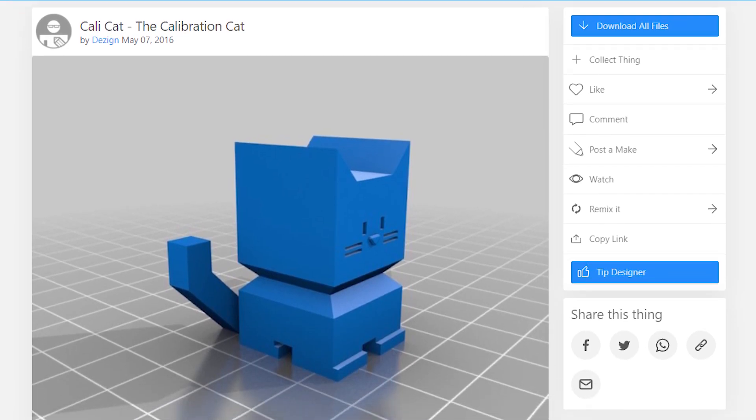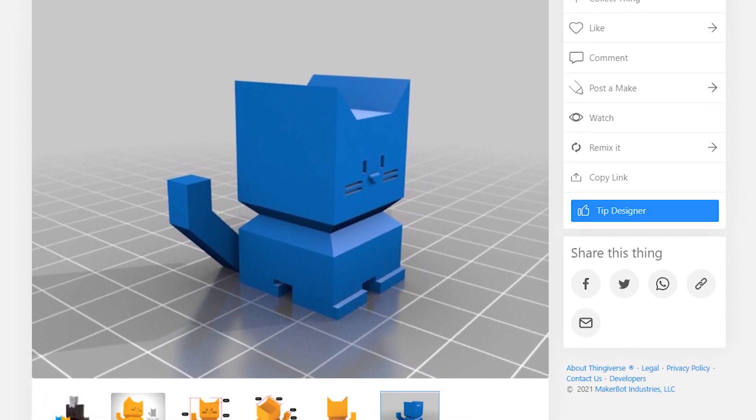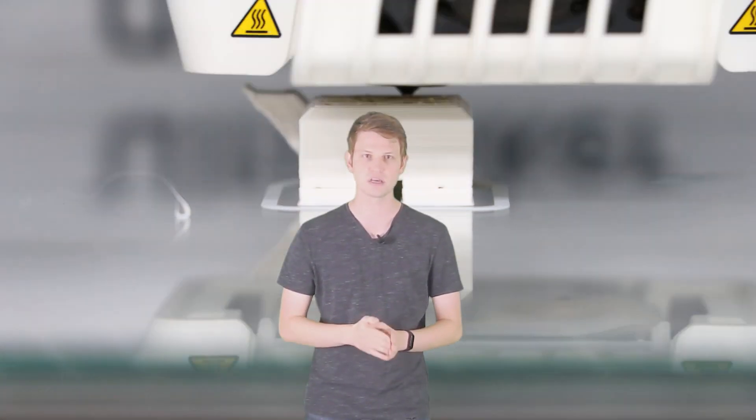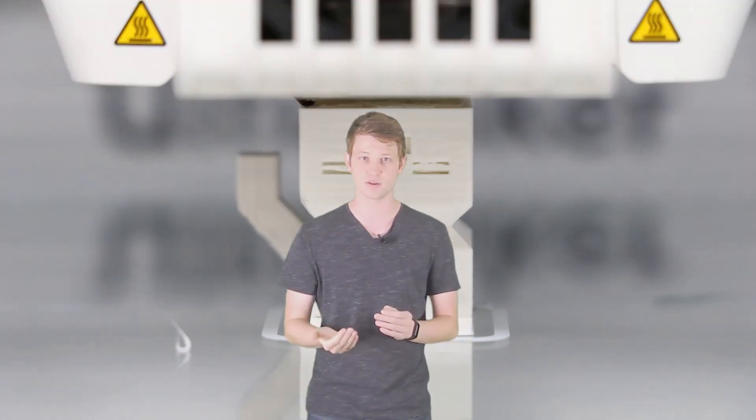Now that we've gone over the features and the pricing, I want to take a quick look at a sample part I printed earlier. This is the CaliCat from user Design over on Thingiverse.com. Its dimensions should be 20x20mm for the body, with a height of 35mm, an overhang of 45 degrees, and the tail end being 5x5mm.